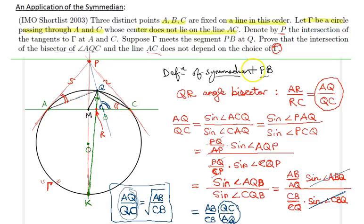And that actually solves the problem. We were able to independently represent AQ over QC, which is equal to AR over RC, which defines the location of R, in terms of AB and CB only, in terms of the initial three given points A, B, C.